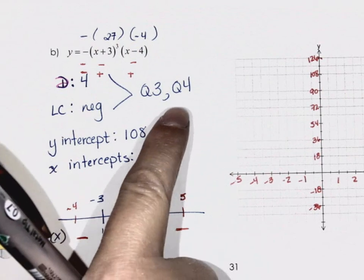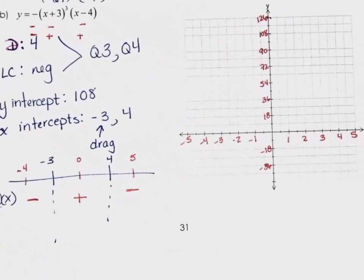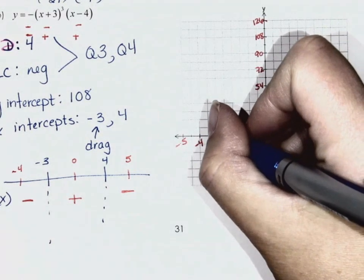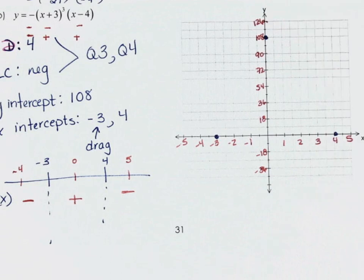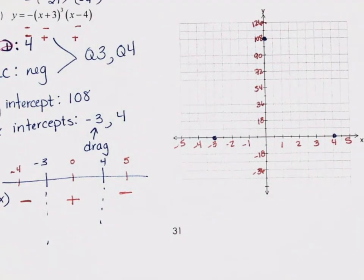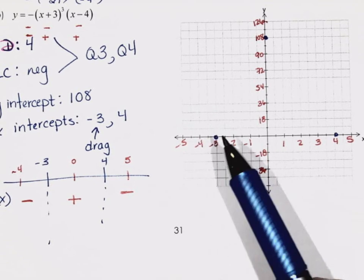And we should have anticipated that because we're down in quadrant 4 as well. Now we can graph. Put x-intercepts on first. We know at the negative 3 x-intercept we have a drag. Starting from the left, y-values less than negative 3 are going to be... wait — y-values for x less than negative 3 are positive. Come up to here and drag through this point.